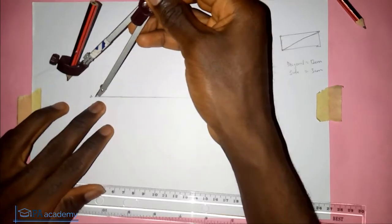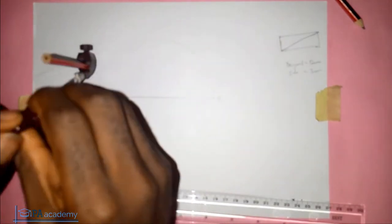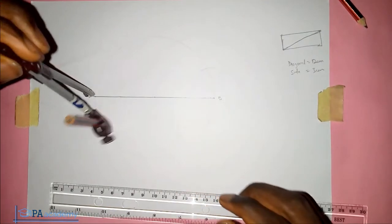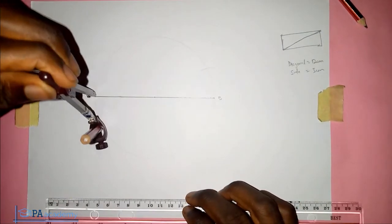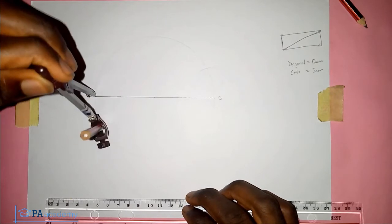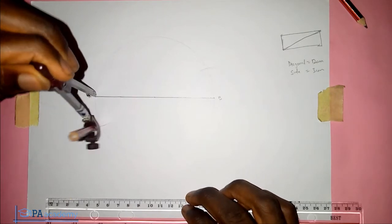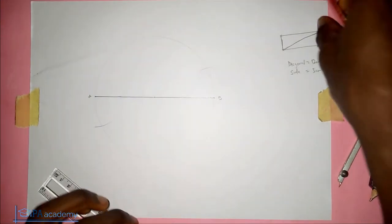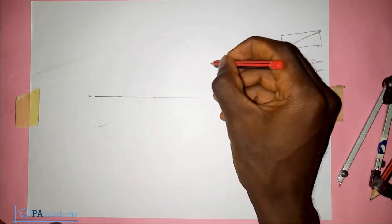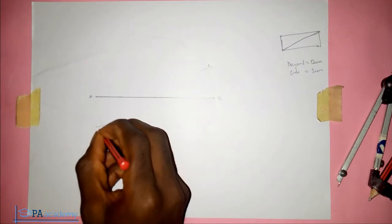Then we will come to point A. So this time around, we are going to be drawing an arc on the circumference downward. So let's name this first point C and let's name this second point D.